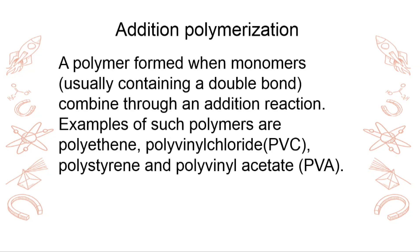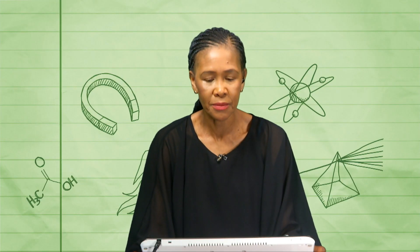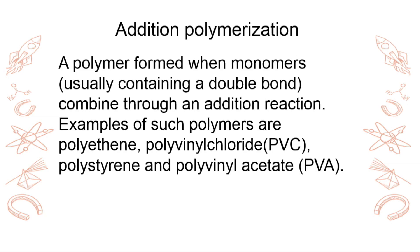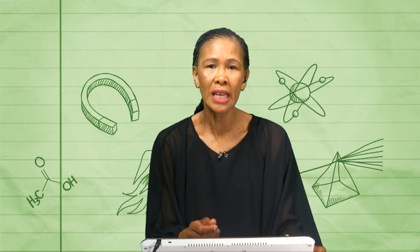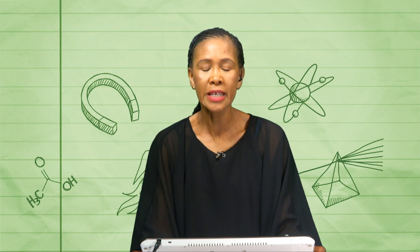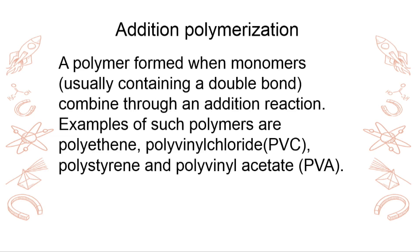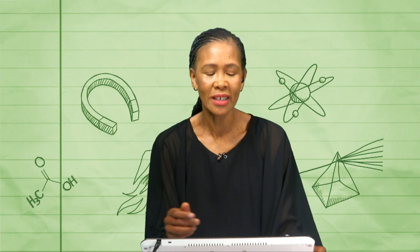Now we've got types of polymerization reactions. We still come across the addition polymerization reaction. The minute you have addition, it means whatever you're going to use as your monomer should have at least a double bond. Examples of such polymers include polyethene, polyvinyl chloride — the PVC, which is the type of tile you see at home sometimes, that plastic-like material. And then you've got polystyrene — that white cup that we use at restaurants is made of polystyrene.